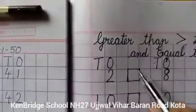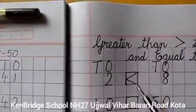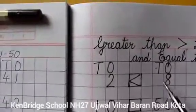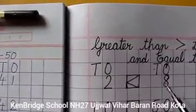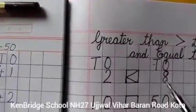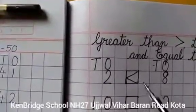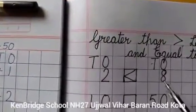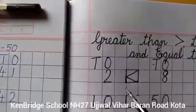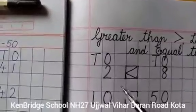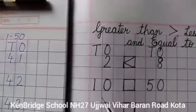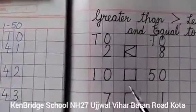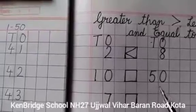तो हम साइन ऐसे लगाएंगे. यह जो साइन है, इसका जो मुह है — mouth — वो हम ओपन करेंगे number eight की तरफ. It means eight number is bigger than number two. The next number is ten and fifty.